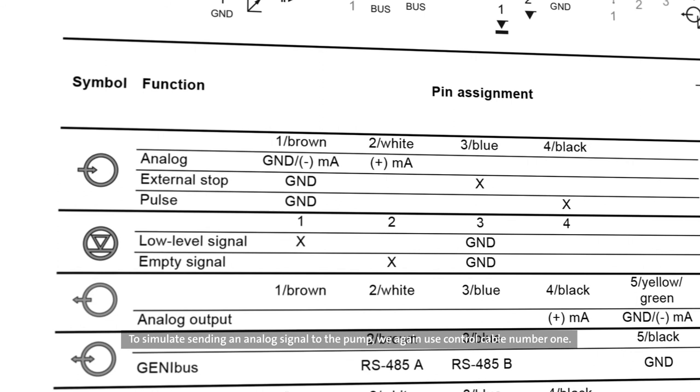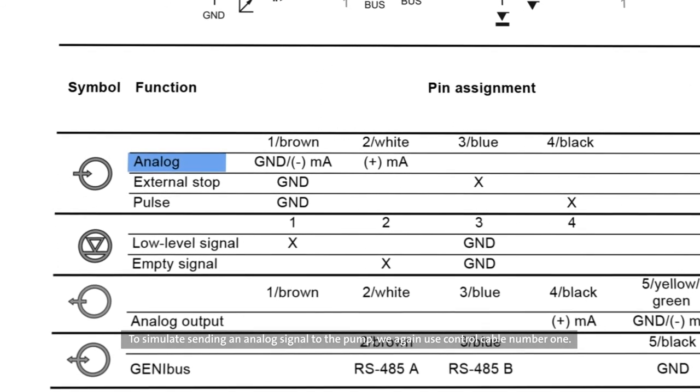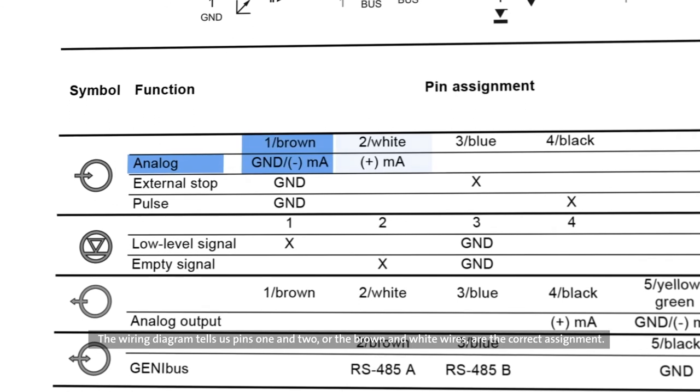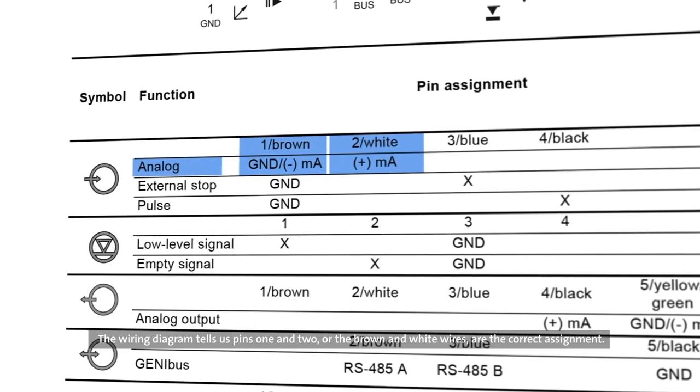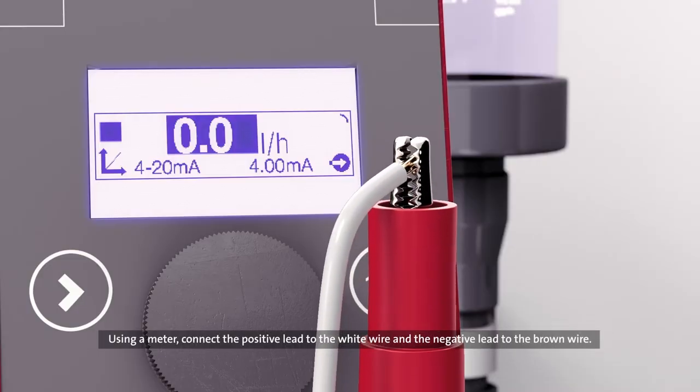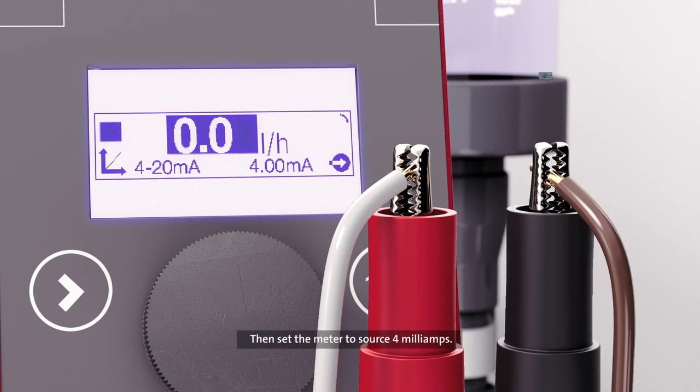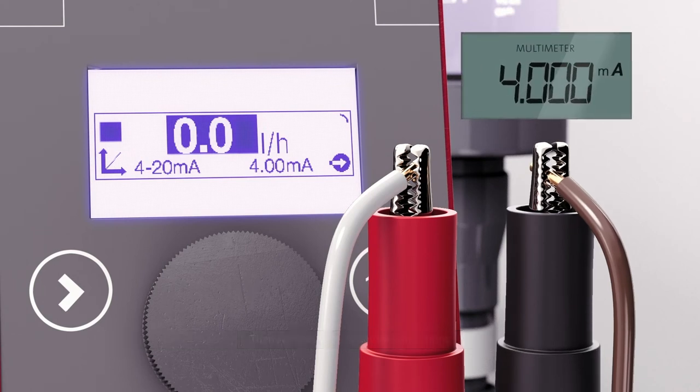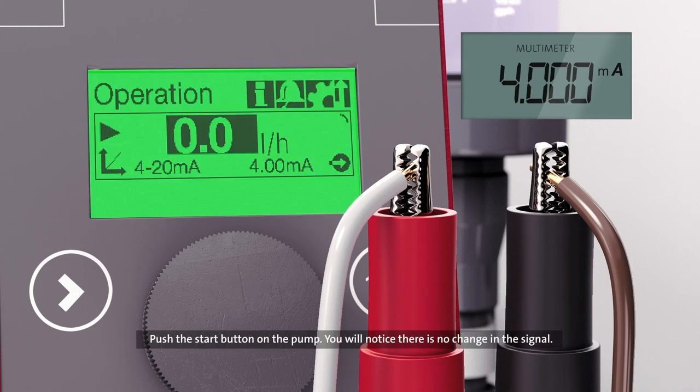To simulate sending an analog signal to the pump, we again use control cable number 1. The wiring diagram tells us pins 1 and 2, or the brown and white wires, are the correct assignment. Using a meter, connect the positive lead to the white wire and the negative lead to the brown wire. Then set the meter to source 4 milliamps. The control cube displays that the current signal is 4 milliamps. Push the start button on the pump.